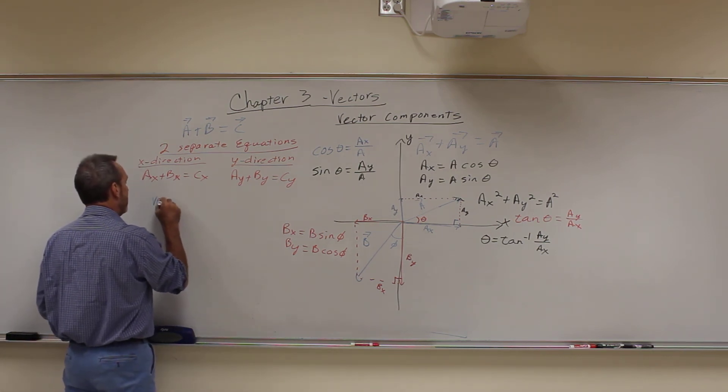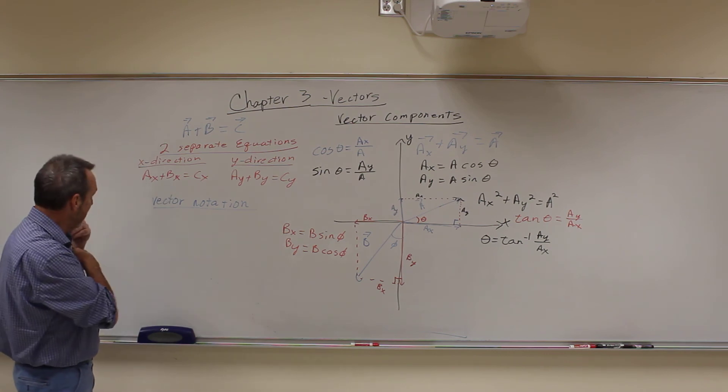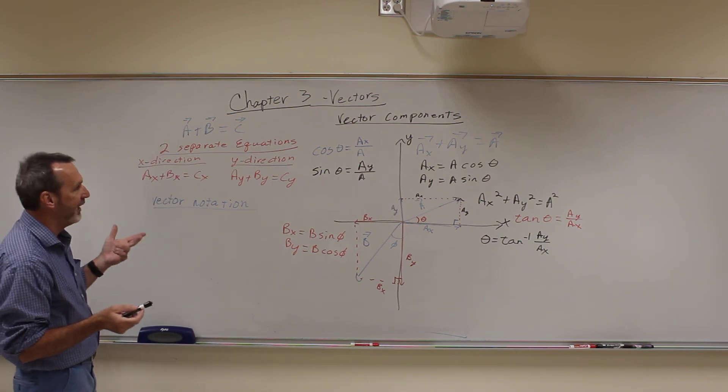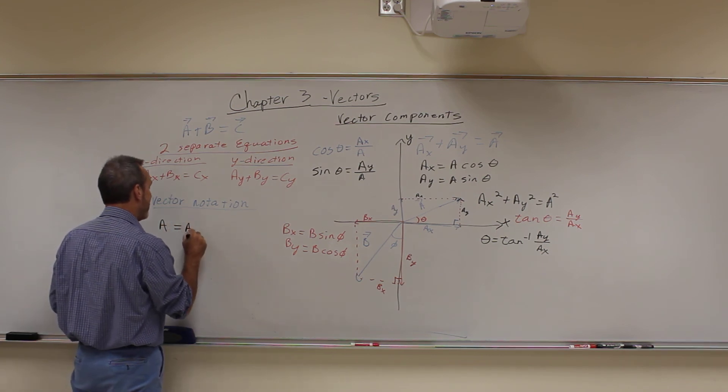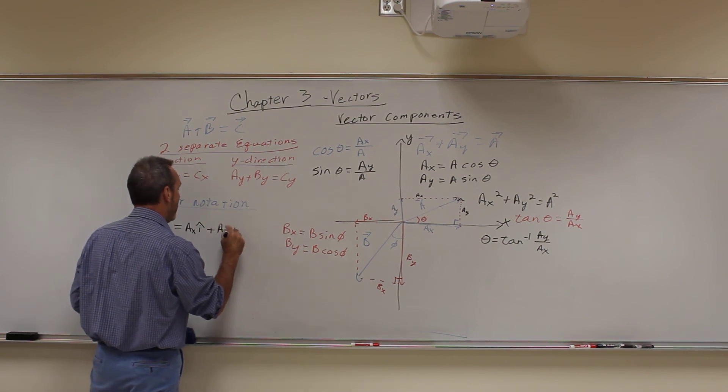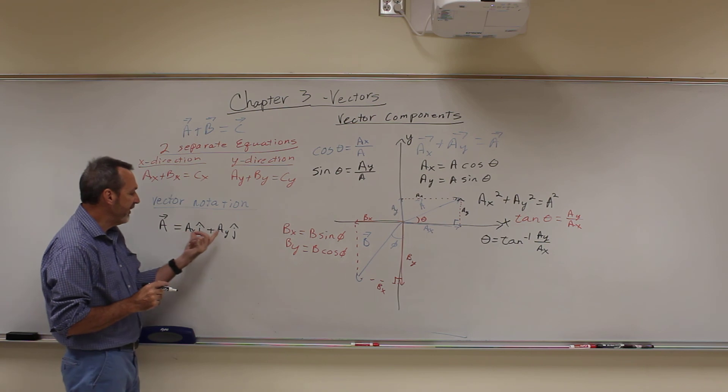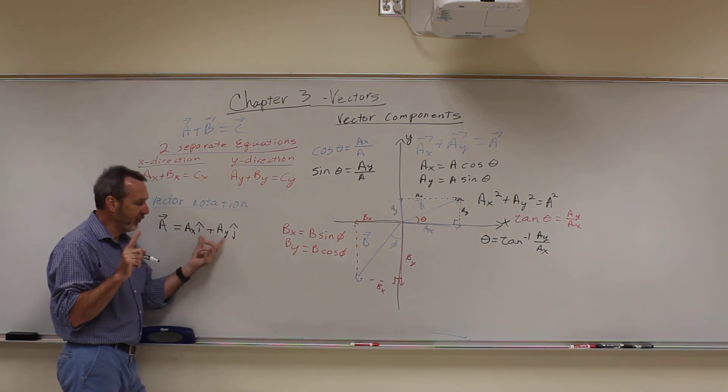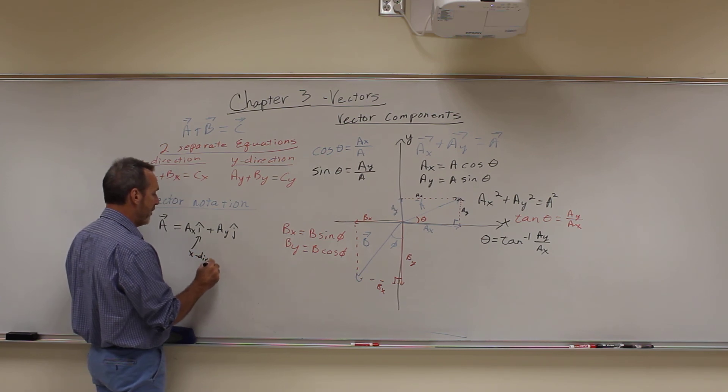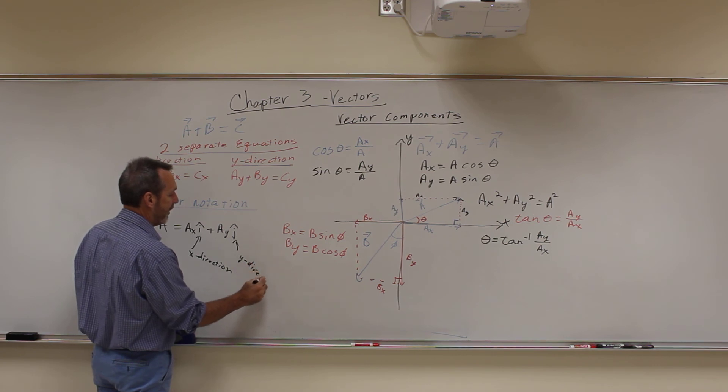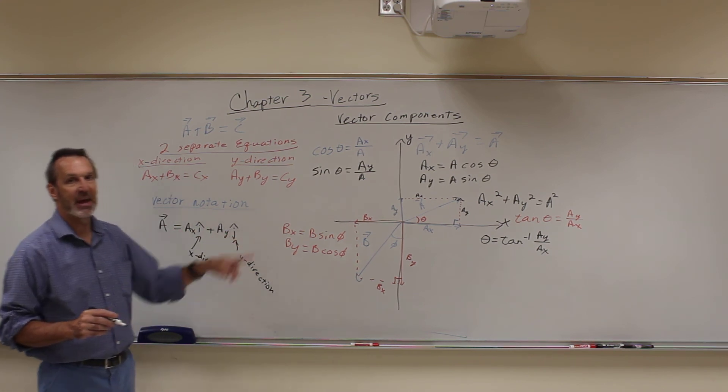One more thing, we also use what we call vector notation, which is just a separate way of writing. Instead of writing X and Y subscripts, you use what's called I hat and J hat and K hat. So our vector A would be equal to AX I hat plus AY J hat. These are just numbers. This is a vector. These are just magnitudes. These tell us the directions. So essentially these are vectors of magnitude one. So when you multiply, it doesn't change the value of it. But it tells you the direction. And I hat means X direction. J hat means Y direction. And if you had a third dimension, it would be K hat. So you would have AX plus AY plus AZ K hat if you had a third dimension.